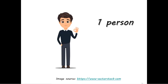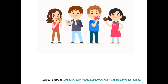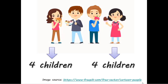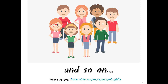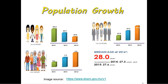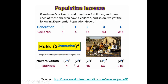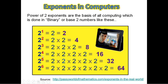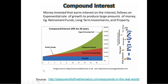Other than that, let's say we have one person and he has 4 children, and each of these children has 4 children, and so on. Then we are going to have population growth! So we can write it in the form of indices. Other than that, we have exponents in computers, compound interest, and many more!